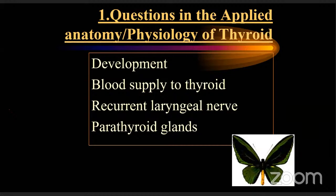The first important thing students should clearly know concerns these four areas as far as the thyroid is concerned: the development of thyroid, the blood supply to thyroid, the anatomy and clinical importance of the recurrent laryngeal nerve in thyroid surgery, and the parathyroid glands.